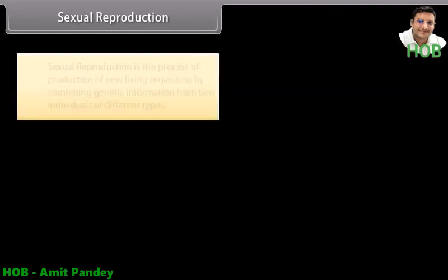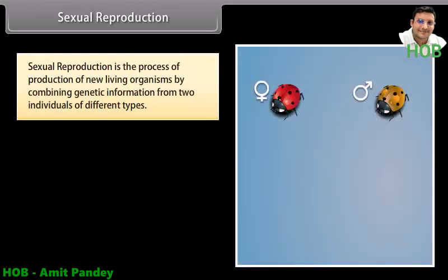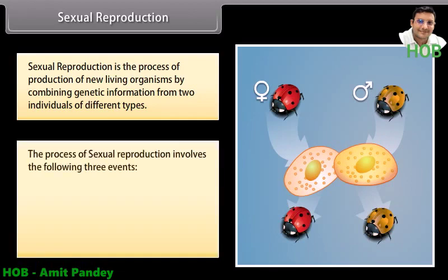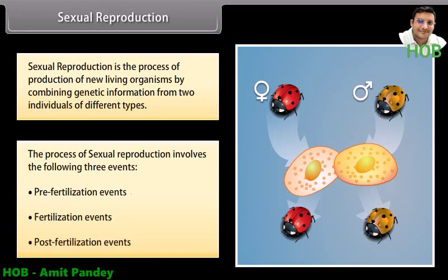Sexual reproduction is the process of production of new living organisms by combining genetic information from two individuals of different types. The process of sexual reproduction involves three events: pre-fertilization events, fertilization events, and post-fertilization events.